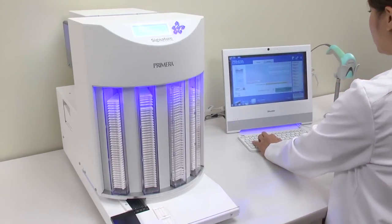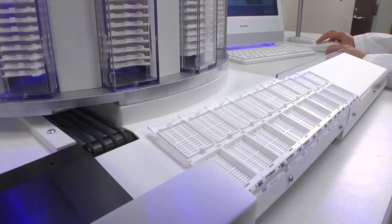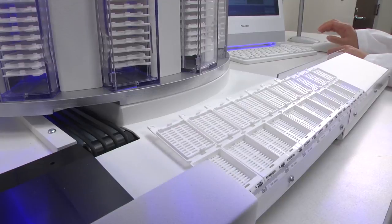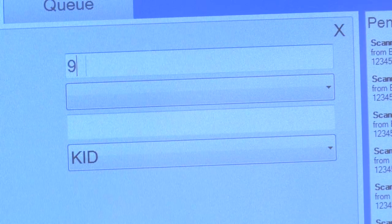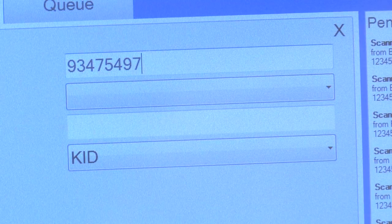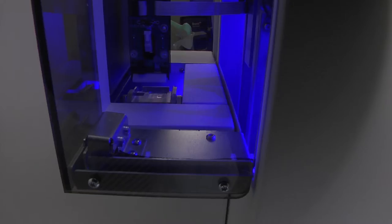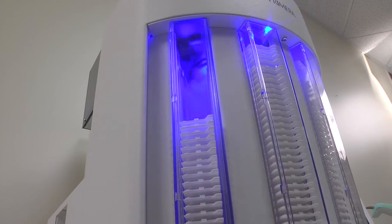Primera's new Signature cassette printer prints directly onto tissue cassettes. It not only helps to increase efficiency but also to eliminate handwriting, reducing the possibility of errors. Signature cassette printer is available in both a manual feed version as well as a fully automated robotic feed system.